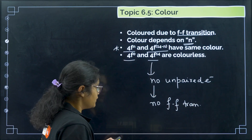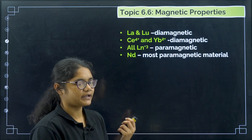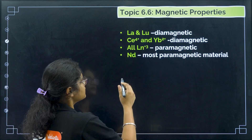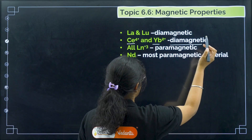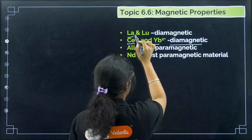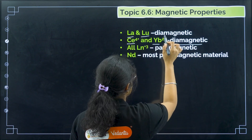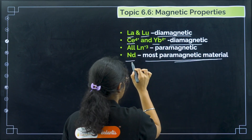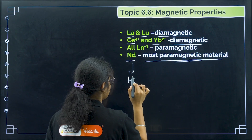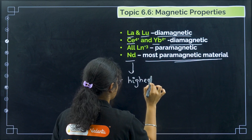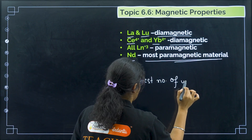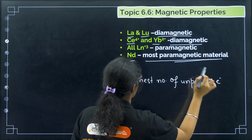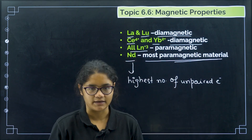Regarding magnetic properties — if there are unpaired electrons, the element will be paramagnetic. Ce⁴⁺ and Yb²⁺ are diamagnetic because there are no unpaired electrons. Lanthanum and lutetium are also diamagnetic. Neodymium (Nd) is the most paramagnetic element in this series, having the highest number of unpaired electrons. All other lanthanide elements in the Ln³⁺ state are paramagnetic.